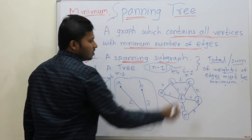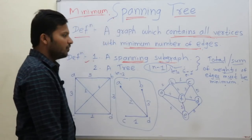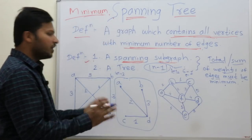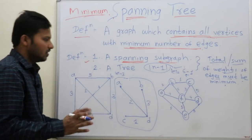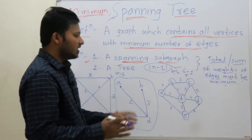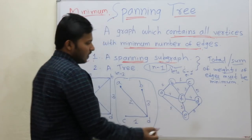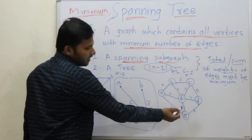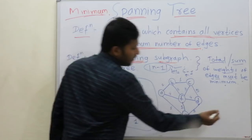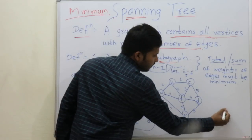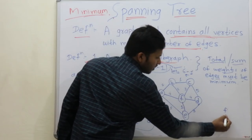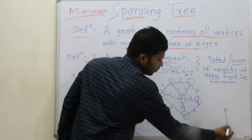So we have to take 5 edges. Let's start from the minimum weight — minimum weight is 1. So take edge F to E with weight 1.